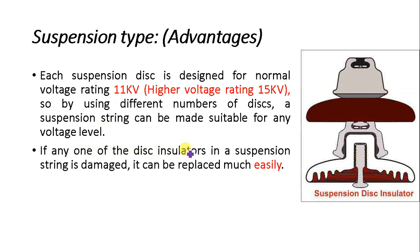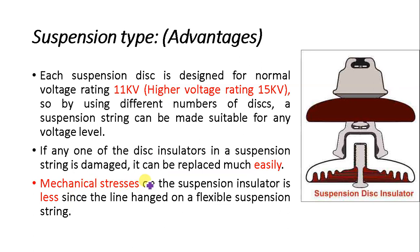Another advantage is that if any disc in a suspension string is damaged it can be replaced easily. For example, in a 33 kV system where three discs are typically used, if one disc is punctured due to a flashover, only that one disc needs to be replaced rather than the whole insulator string. Replacement is therefore much simpler and more economical.